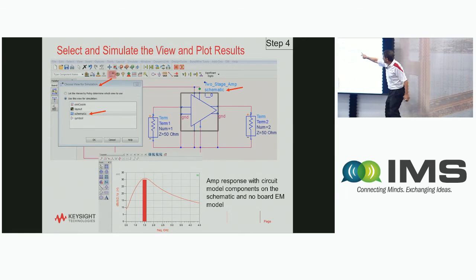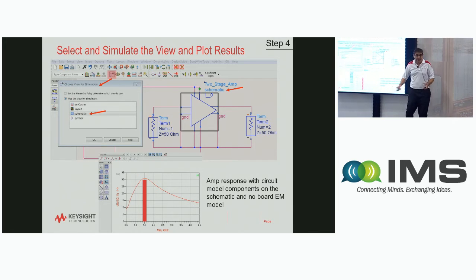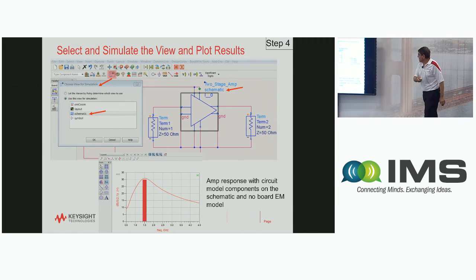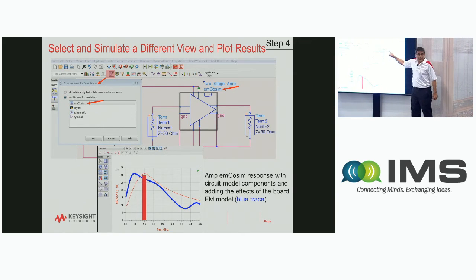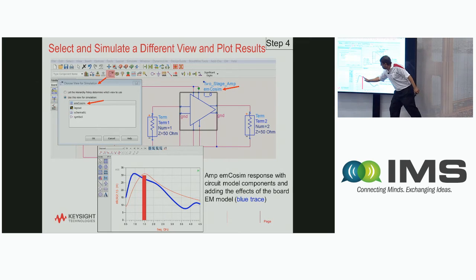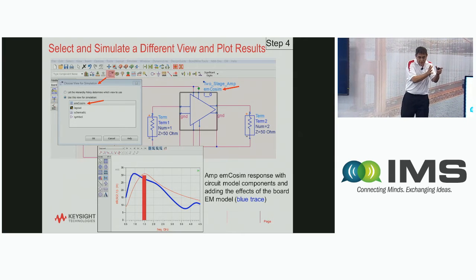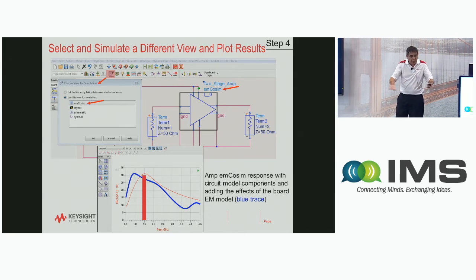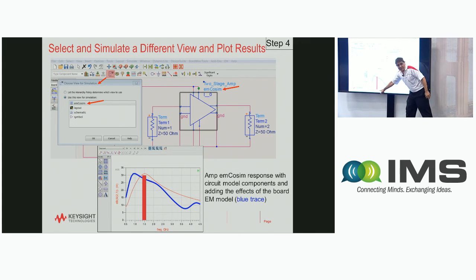By selecting 'schematic' here, this is the circuit-level simulation of my amplifier. Next, I change the view to the EM co-simulation view. Notice the blue curve is the simulation of the amplifier — it has shifted to a lower frequency due to the coupling and the EM simulation of the board. This frequency was originally one and a half gigahertz, and it has shifted all the way down to one gigahertz. I want to bring it back to one and a half gigahertz.